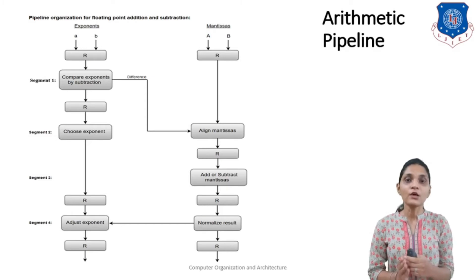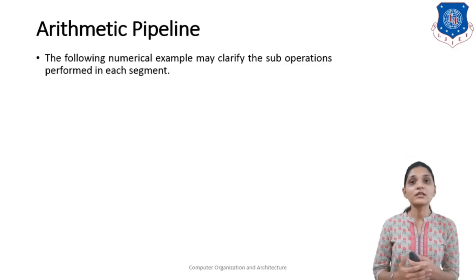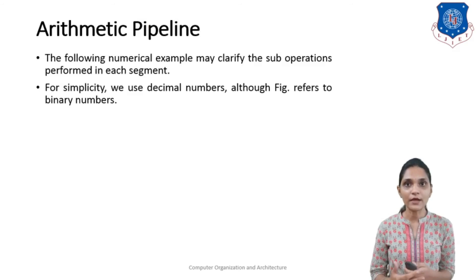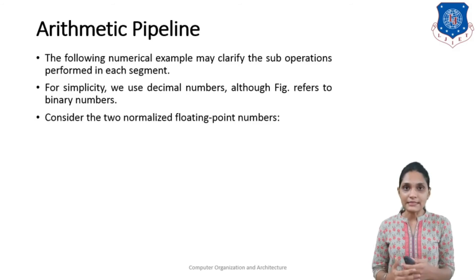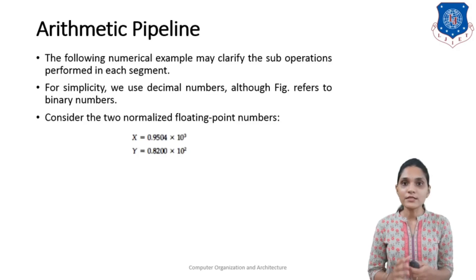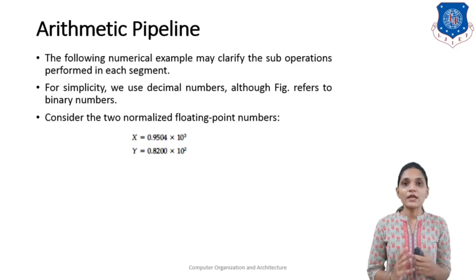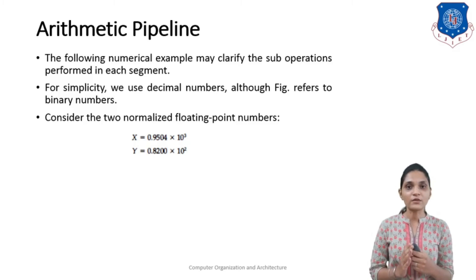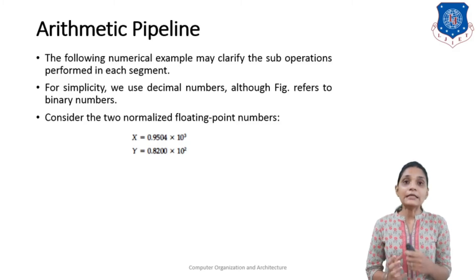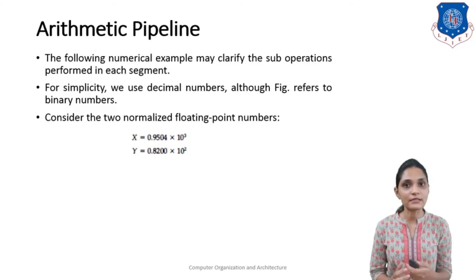First we will look at a decimal number example, then revisit the flow chart. The following numerical example will clarify this operation. We are considering decimal numbers, though the figure is for binary — both work the same way. Consider two normalized decimal numbers: X equals 0.9504 into 10 raised to 3, and Y equals 0.8200 into 10 raised to 2. Both numbers are in normalized form, meaning 0-point-something. Their exponent terms are different: X has exponent 3 and Y has exponent 2.